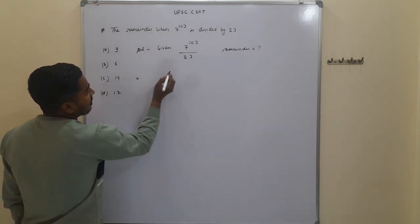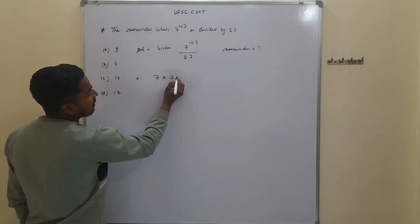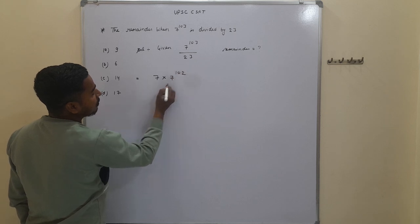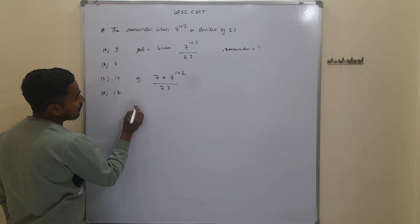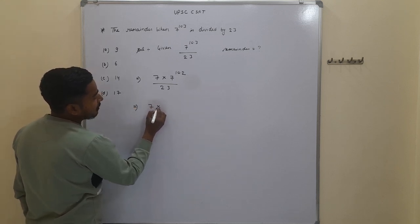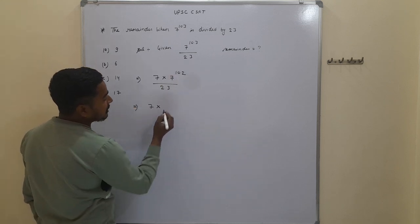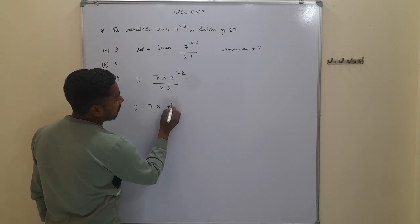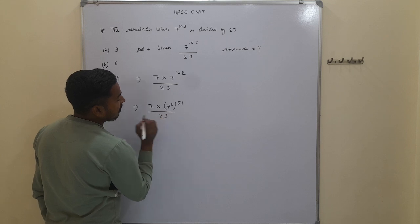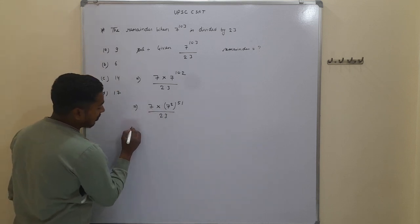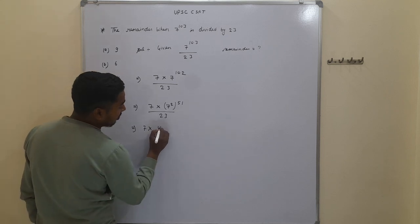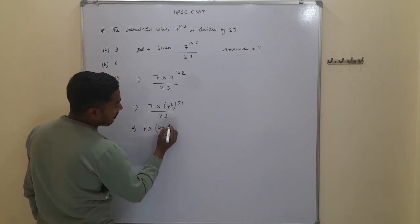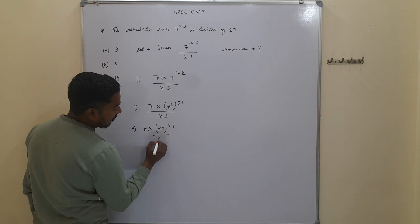7 to the power 103 is written as 7 into 7 to the power of 102, divided by 23. We can also write 7 to the power 102 as 7 to the power of 2 into 51, upon 23. Further, 7 squared is 49, so this becomes 7 into 49 to the power of 51, upon 23.